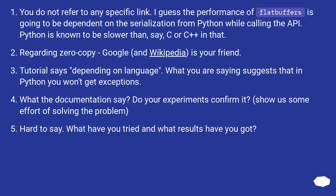You do not refer to any specific link. I guess the performance of flatbuffers is going to be dependent on the serialization from Python while calling the API. Python is known to be slower than C or C++ in that. Regarding zero copy, Google and Wikipedia are your friends. The tutorial says performance depends on the language. What you are saying suggests that in Python you won't get the exceptions the documentation mentions. Do your experiments confirm it? Show us some effort of solving the problem. What have you tried and what results have you got?